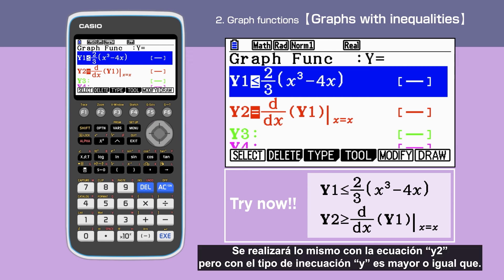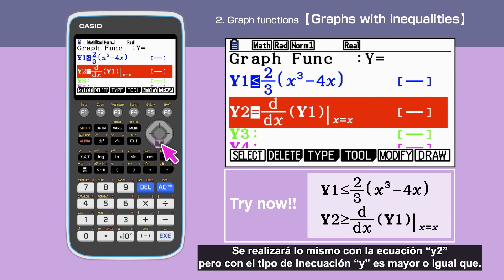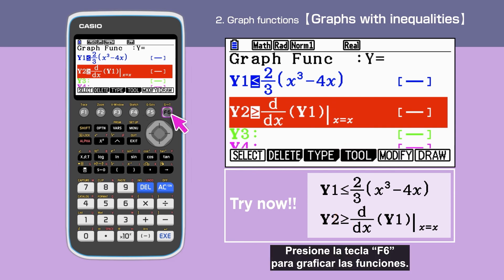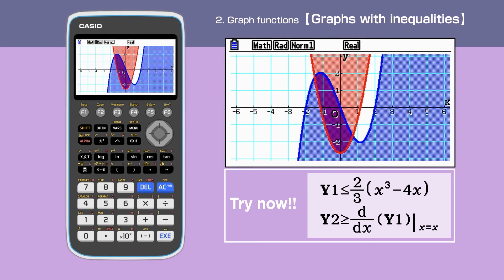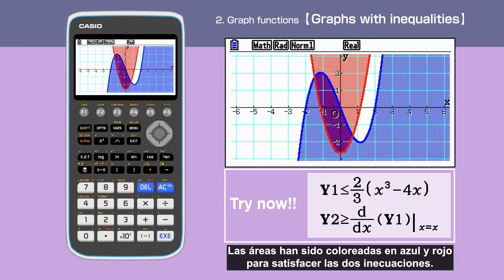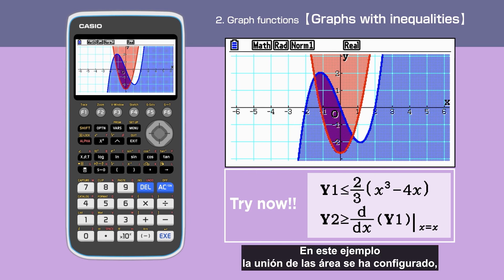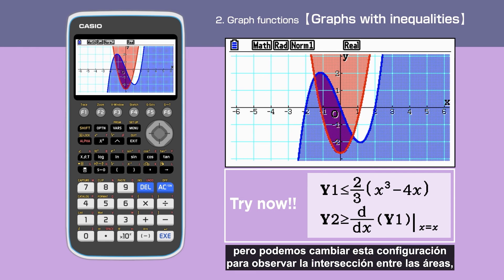We also change to the same inequality with equation y2. Press F6 to draw the graphs. The areas have been colored in blue and red to satisfy both inequalities. In this example, union areas have been highlighted, but we can change this into intersection areas.